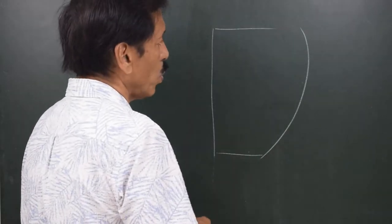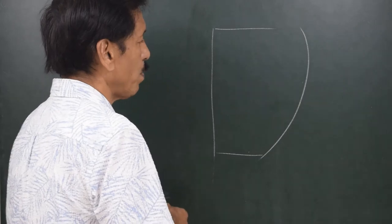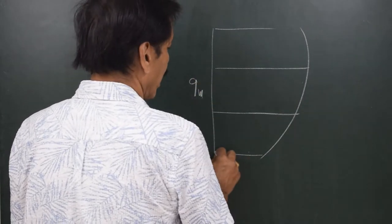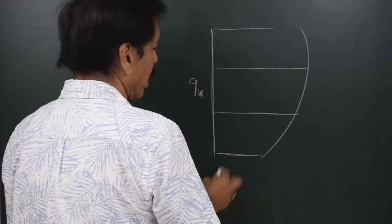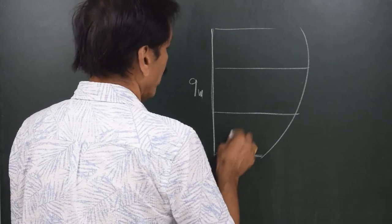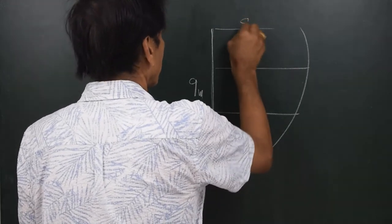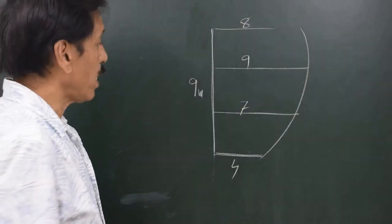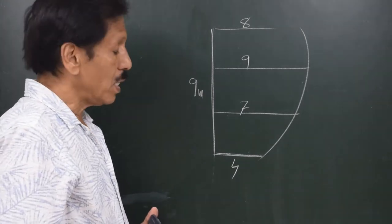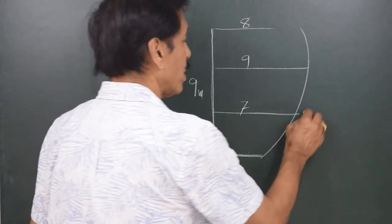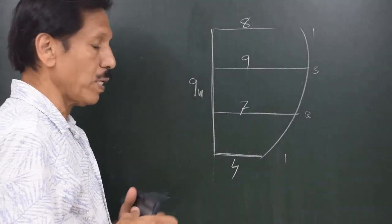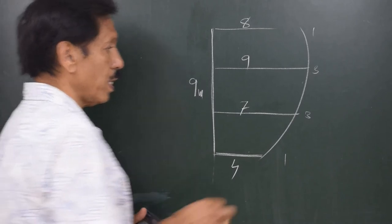Let us say that there is a tank whose bulkhead is in a particular shape. The bulkhead is nine meters high and extends sideways from the center line. The widths at different levels are: four meters, seven meters, nine meters, and eight meters — four ordinates, three segments. The number of segments is divisible by three, so we can use rule number two, which is the 1-3-3-1 rule.